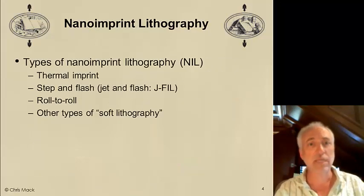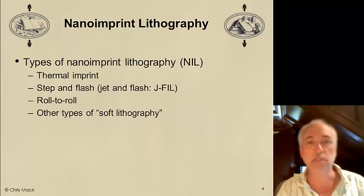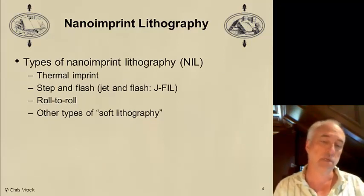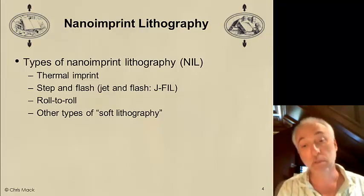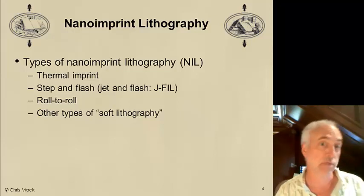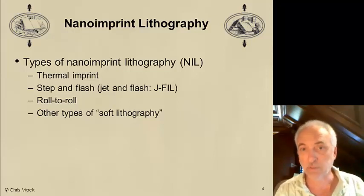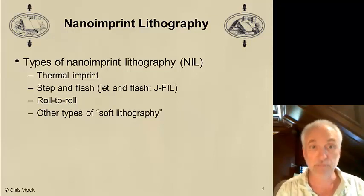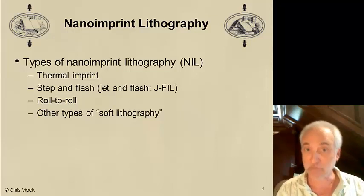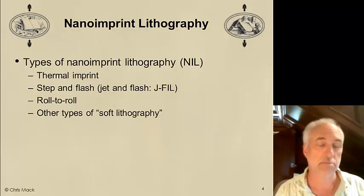There are many types of nano-imprint lithography. When we use the word nano-imprint instead of just imprint lithography, it implies that we're creating nanometer scale features — things less than 100 nanometers, for example. The types of nano-imprint lithography approaches are thermal imprint, step-and-flash or jet-and-flash imprint, roll-to-roll, and some other soft lithography techniques as well, which we'll briefly mention.